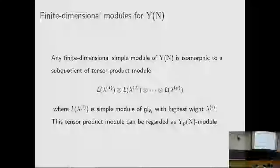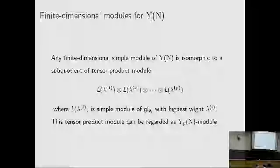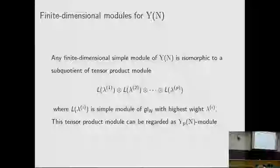Any finite-dimensional simple module of the Yangian is isomorphic to a sub-quotient of a tensor product module, where L(lambda_i) is a simple module of GLN with highest weight lambda_i. This tensor product module can be regarded as a Yangian of level P module.